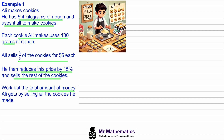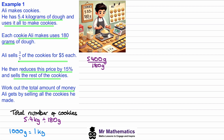The first thing we need to do is work out how many cookies he makes in total. He uses 5.4 kilograms of dough, so the total number of cookies will be 5.4 kilograms divided by 180 grams. We convert kilograms to grams by multiplying by 1000, giving us 5400 grams divided by 180 grams, which gives us 30 cookies.